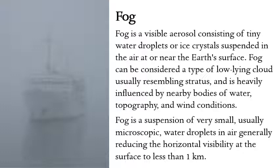Fog is a suspension of very small, microscopic water droplets in the air, generally reducing horizontal visibility at the surface to less than one nautical mile. Sometimes the visibility can be reduced to zero — meaning you cannot see even one meter in front of you. It depends on the density of the fog.